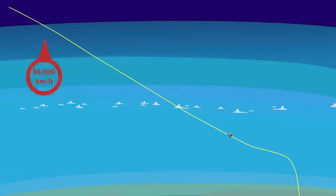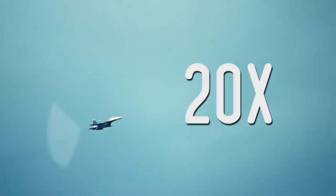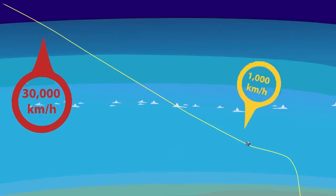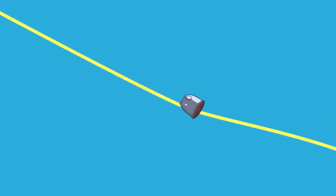During atmosphere entry, all vehicles typically start at almost 30,000 kilometers an hour. That's more than 20 times the speed of sound. After about eight minutes of descent, the atmosphere will be able to decelerate the vehicle to just about 1,000 kilometers an hour. This is still way too fast for a gentle touchdown though, so a series of parachutes are deployed.